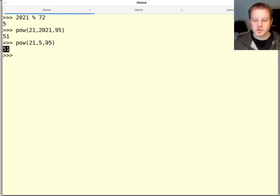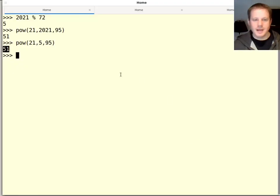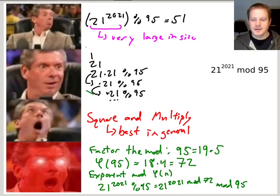So if you can factor the modulus, that allows you to reduce that exponent much smaller by taking the exponent mod phi of n. So that is the last trick. And in general, you would combine that with the square and multiply algorithm after you've reduced the exponent. So in this case, we could reduce the exponent from 2021 to just 21 to the 5 mod 95. And we get the same answer of 51, regardless of how we do it.